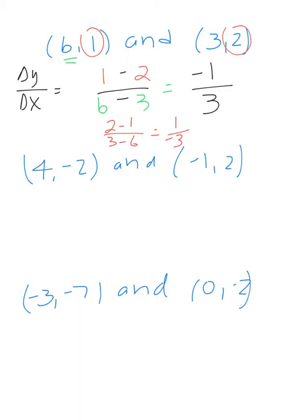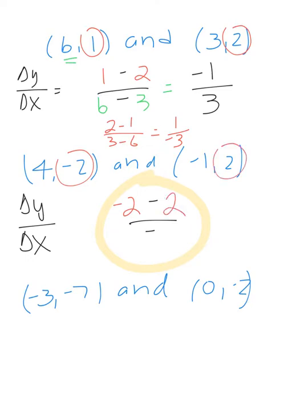Let's take a look at the next one. 4 and negative 2, and then we have negative 1, 2. Now this is why it's important to set up your fraction bar with those minus signs. So we have negative 2 and 2. And now we have 4, and this is the tricky part, negative 1.